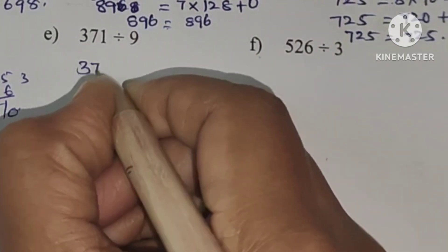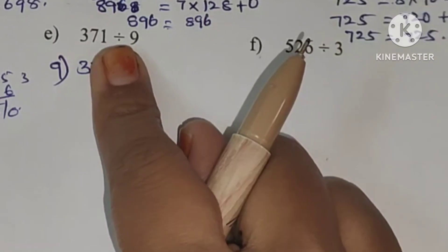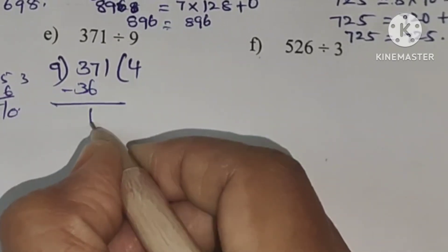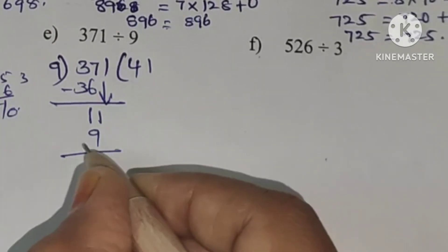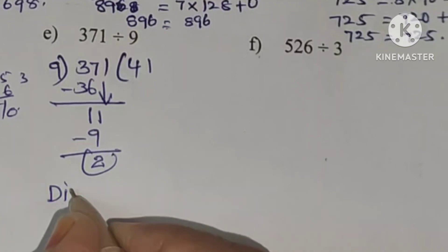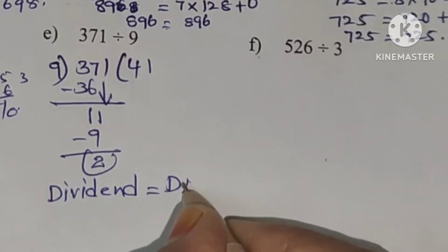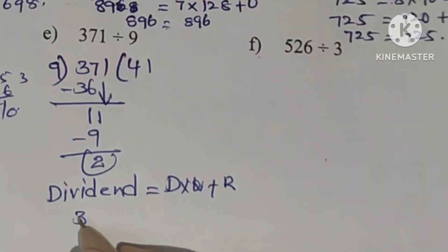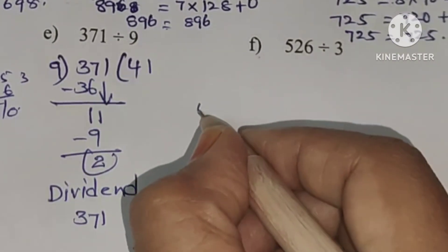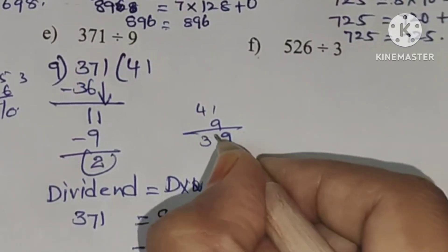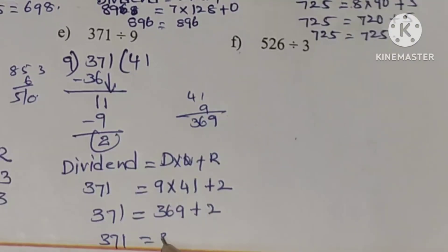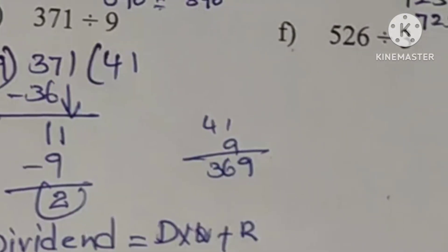371 divided by 9: first digit 3, bring down 37. 9 fours are 36, subtraction gives 1. Bring down next number 11. 9 ones are 9, remainder 2. Checking: dividend equals divisor into quotient plus remainder. 371 equals 9 into 41 plus 2. 9 times 41 is 369, plus 2 equals 371.